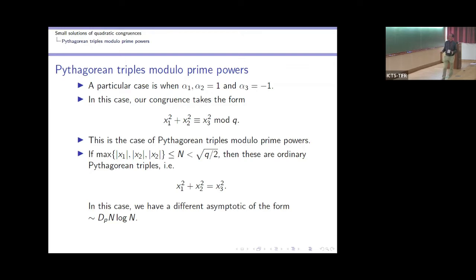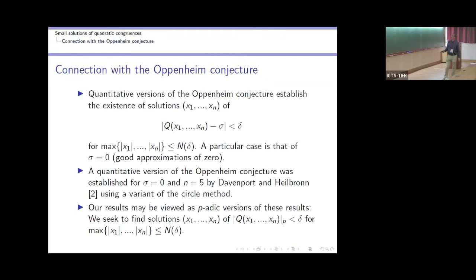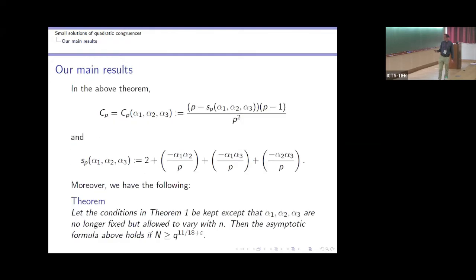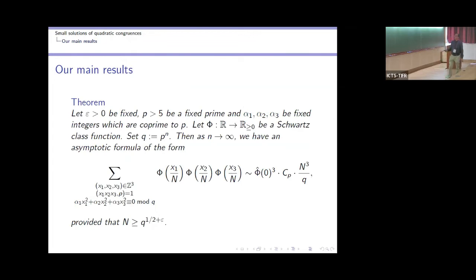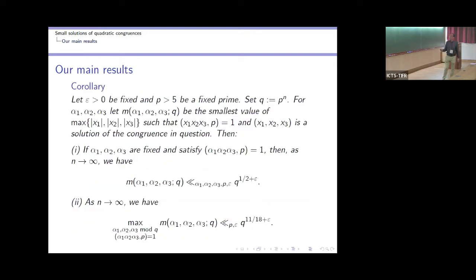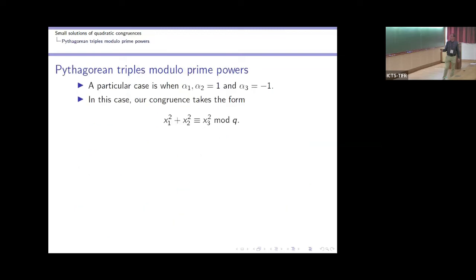We get some trivial solutions where x₁, x₂, x₃ are small compared to the square root of the modulus: when all are less than √(q)/2, the congruence turns into an equation and we count exactly Pythagorean triples. The asymptotics are known: a constant depending on p (accounting for the coprimality condition) times N log N. That's a very different asymptotic from what we get when N is larger than the square root of the modulus.